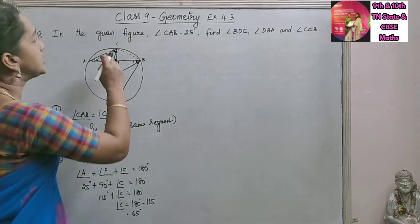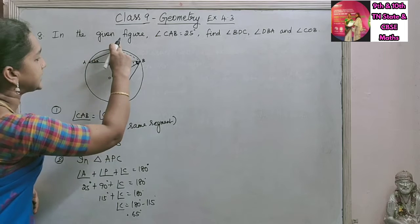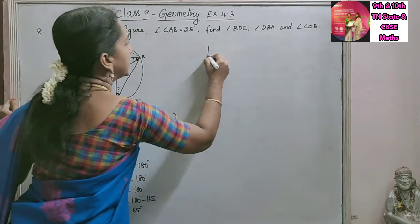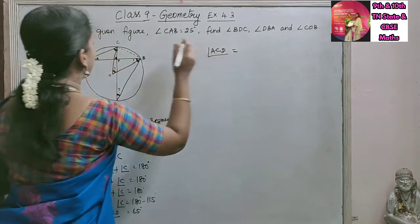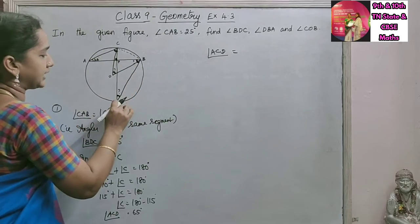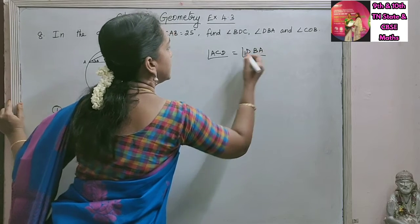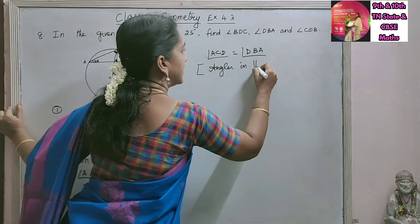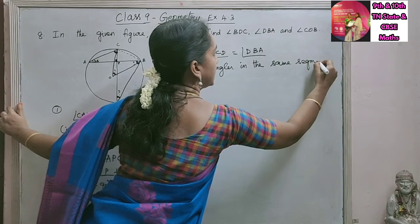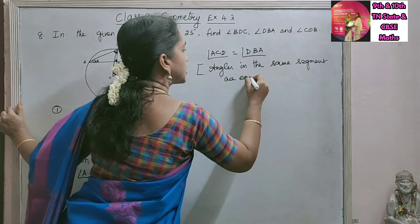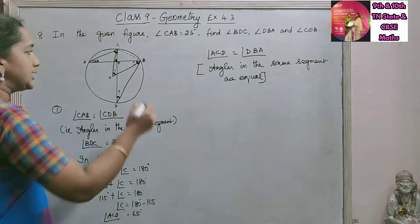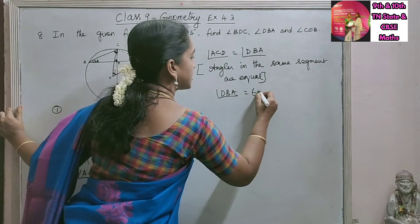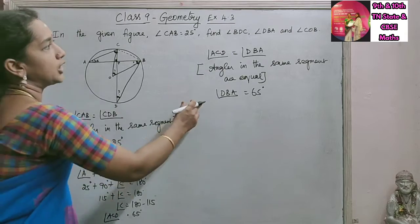So we got the measure of angle ACP as 65 degrees. As angle ACP is equal to angle DBA — they are equal by the angles in the same segment property — angle DBA is also 65 degrees. So we got the second answer.